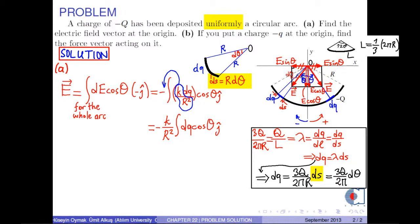Therefore, if we write this expression into the formula for the electric field, we obtain negative k over r squared times integral of 3q over 2 pi times cosθ dθ j hat. And because 3q over 2 pi is constant, it can be taken outside the integral sign.